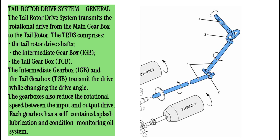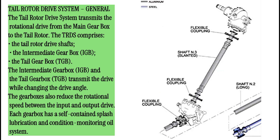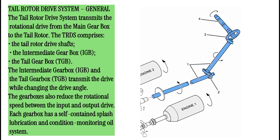The tail rotor drive system transmits the rotational drive from the main gearbox to the tail rotor. The TRDS comprises the tail rotor drive shafts, the intermediate gearbox (IGB), and the tail gearbox (TGB). The IGB and TGB transmit the drive while changing the drive angle, and also reduce the rotational speed between the input and output drive. Each gearbox has a self-contained splash lubrication and condition monitoring oil system.